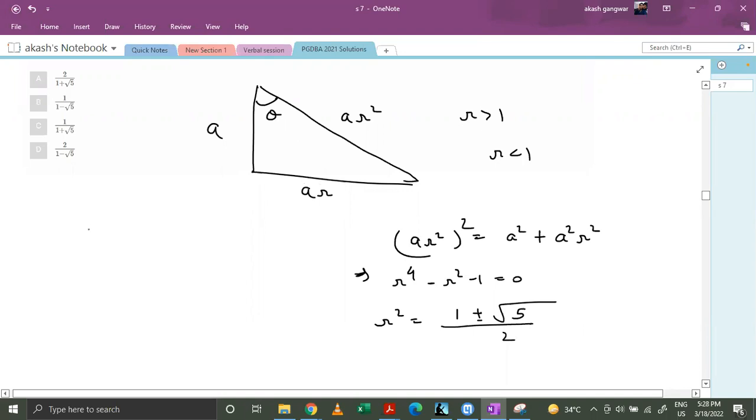So our cos theta would be A by AR square. Here R square is always positive. That's why R square is 1 plus root 5 by 2. So cos theta would be 2 by 1 plus root 5.